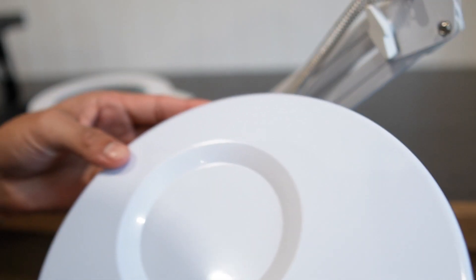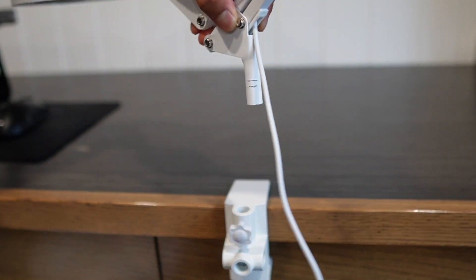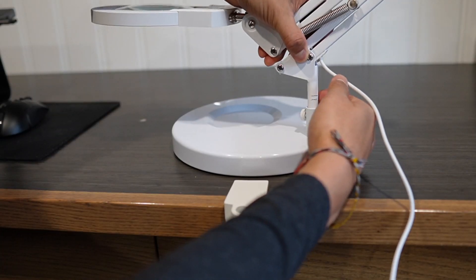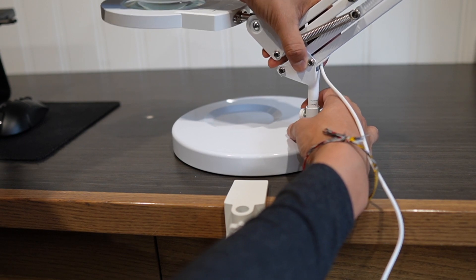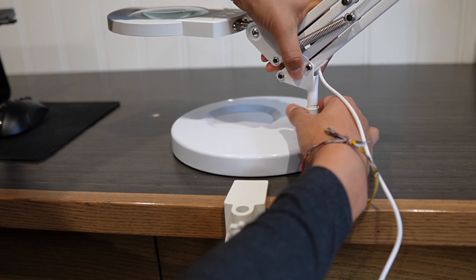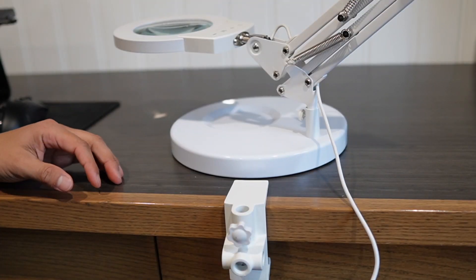If I want to change it to the base, it's real simple. Just loosen this up and it comes right off. Put the base down, insert it in, loosen this a little bit. It goes all the way down, and then I can screw it in.